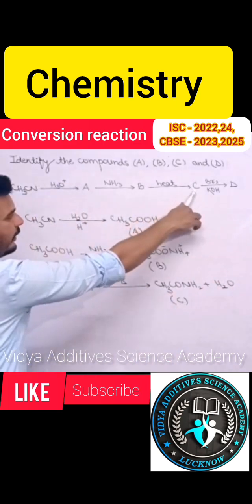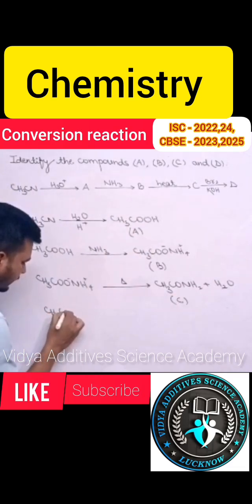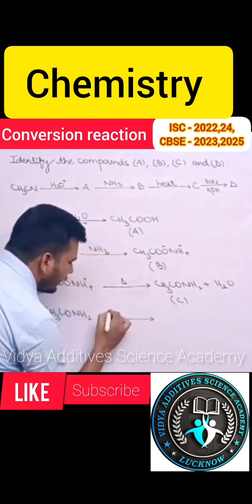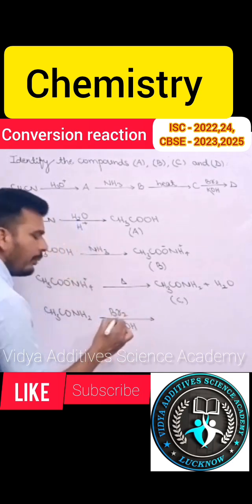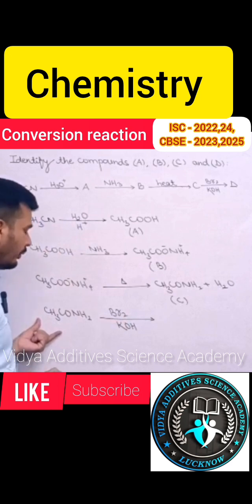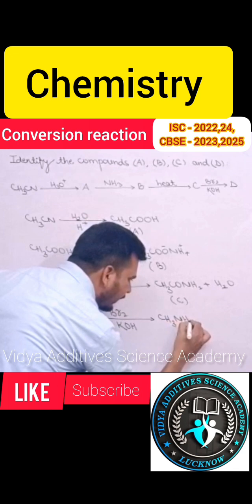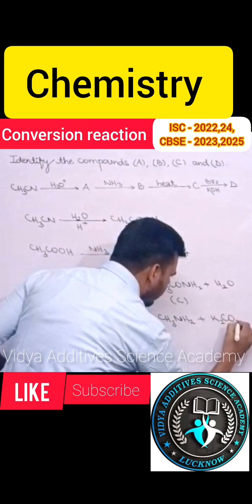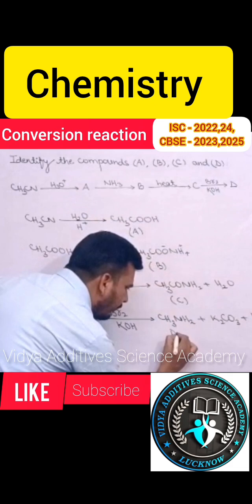Further compound C reacts with bromine in presence of potassium hydroxide. So when acetamide reacts with bromine in presence of a base, it is Hoffman bromamide degradation reaction. In Hoffman bromamide degradation reaction, one carbon atom will be less than the parent compound. So acetamide will convert into amine that is CH3NH2 and potassium carbonate and potassium bromide. So compound D will be amine.